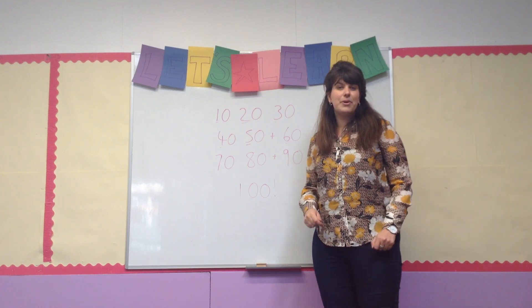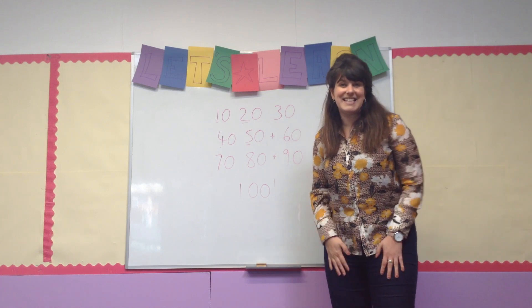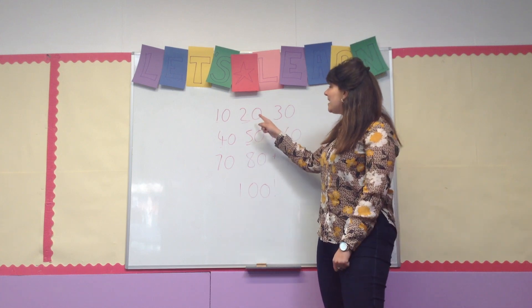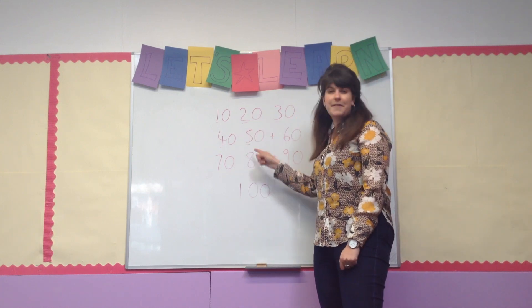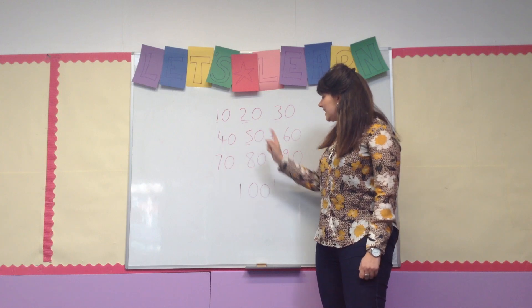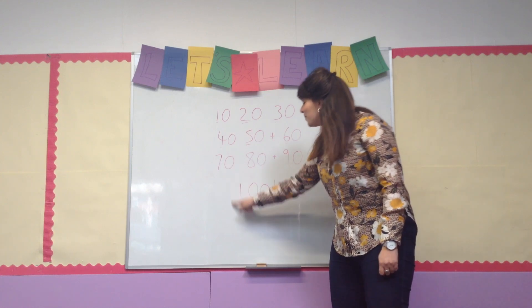I know a way to count in tens and this is how it goes. 10, 20, 30, 40, 50 and 60, 70, 80 and 90 until we reach 100.